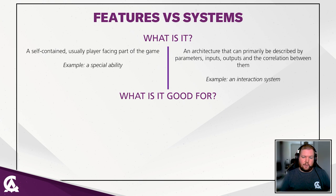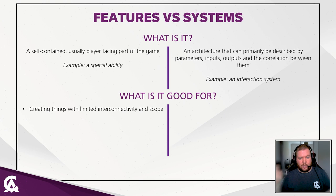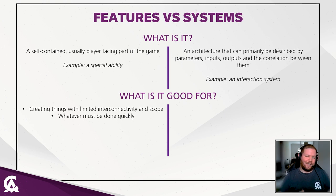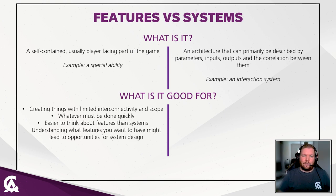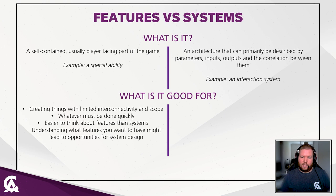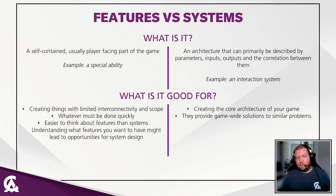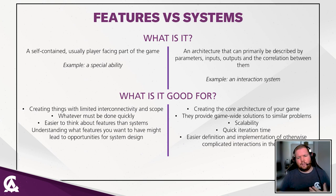Features are used for things with limited interconnectivity and limited scope, or when you need to create something quickly. Features can also serve as an ideation jumping board for systems — thinking about what features your game might need can inform what systems to build. Systems are good for creating the correct architecture of your game, providing game-wide solutions to similar problems. They are scalable and generally have much quicker iteration time.